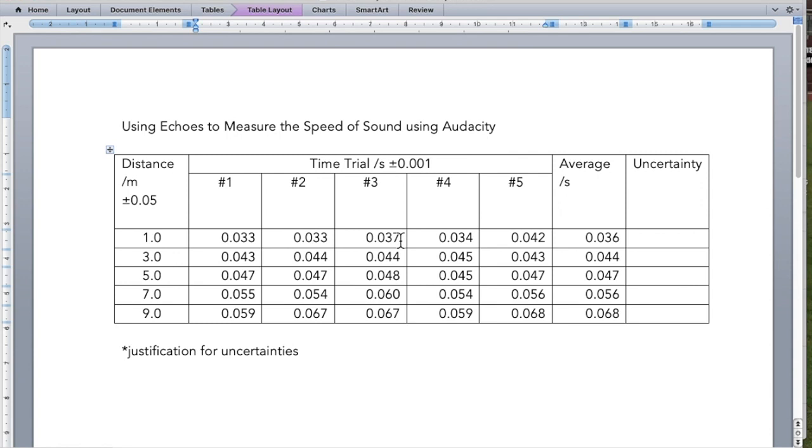All of these units and uncertainties need to be in our headers. In your data table, I should only see values. No text in these tables.